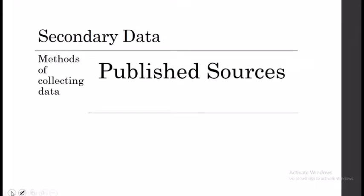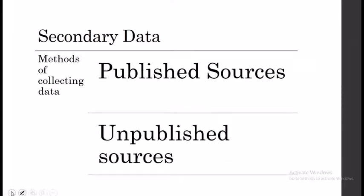To summarize, we have covered what data is, types of data — noting there are more classifications to be discussed in part two — and the sources of data, which include two main types: primary data and secondary data. We also looked at the methods of collecting primary and secondary data. The detailed advantages and limitations of both primary and secondary data will be provided in a PDF uploaded to the portal very soon. Thank you, I hope you have all understood this session.